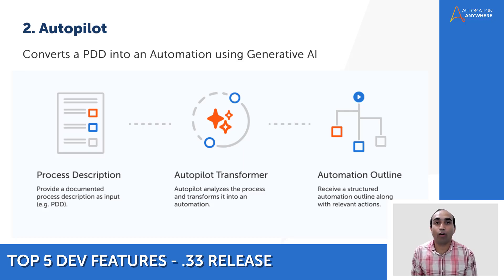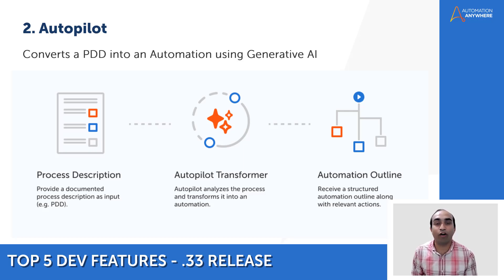Moving on to number two: Autopilot. Autopilot is powered by generative AI and turns business process descriptions into ready-to-use Automation Anywhere code. The AI models have been fine-tuned with specialized prompts and a deep understanding of how Automation Anywhere code works, giving you a full automation outline ready with the correct structure and commands.